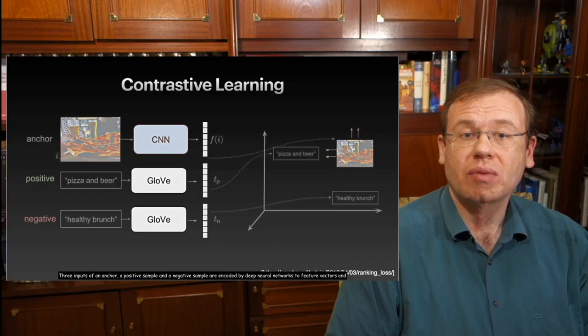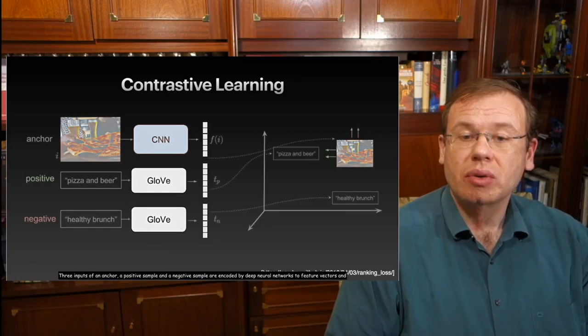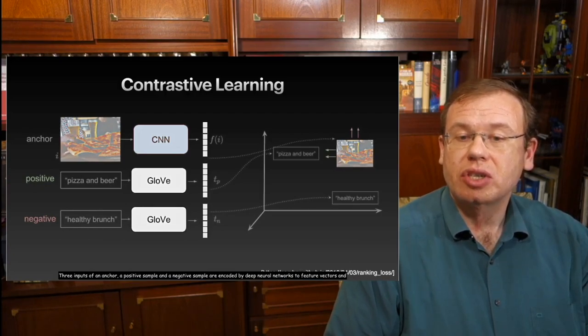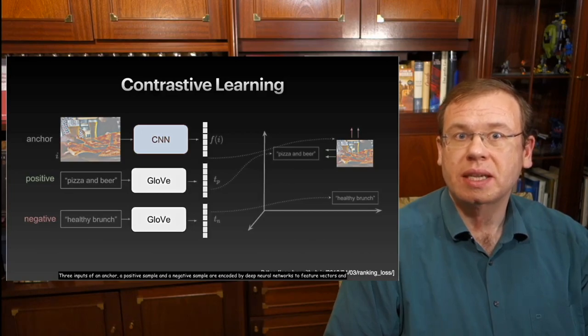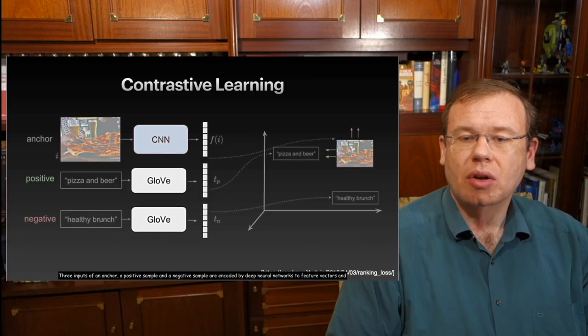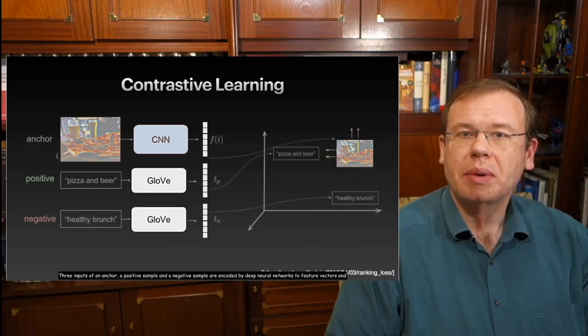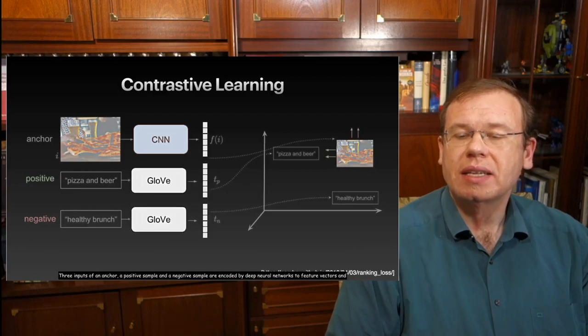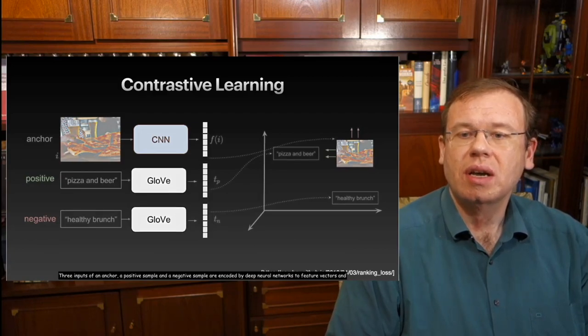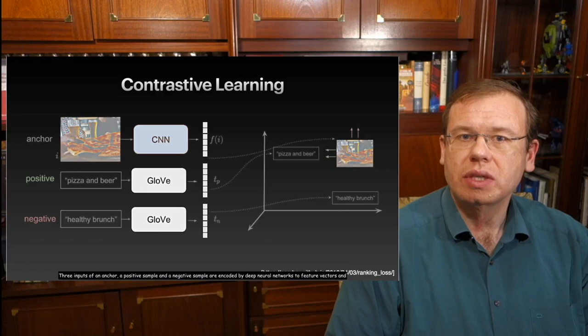Now, what they are working with is contrastive learning. And they show this nice example here where they use images and language. So we have here an image that shows obviously beer and pizza. And then they also have a text that is matching. And the positive example would be the description pizza and beer. And the negative one would be healthy brunch.